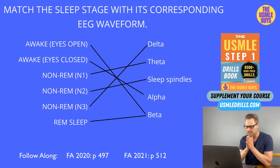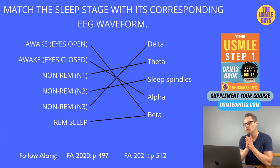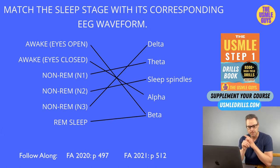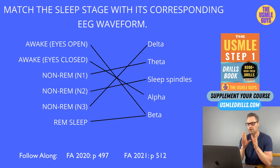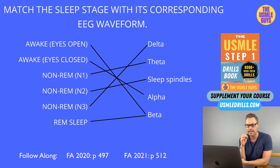The sleep cycle is broken into two stages: non-REM sleep and REM sleep. Certain substances are notorious for disrupting REM sleep — alcohol, barbiturates, and benzodiazepines. These substances also disrupt non-REM sleep, specifically stage N3. Norepinephrine will also decrease the amount of REM sleep someone gets, so that's really important to keep in mind.